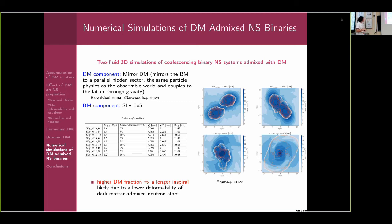Depending on the dark matter fraction, we see different inspiral phases. One conclusion is that the higher the dark matter fraction, the longer the inspiral. We think this is due to the lower tidal deformability of the stars — because dark matter makes them more compact. In the visualization, you can see the distribution of baryonic matter shown in color and dark matter shown in the contour plot. Because this is the core configuration, dark matter always stays in the core.